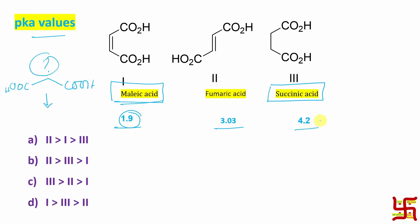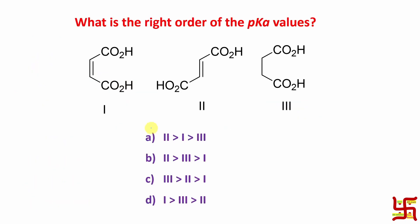So now question if I say pKa actually pKa is actually least here. So it is maximum acidic, pKa is most is 4.2. So what is the right order? Three greater than two greater than one. So this is actually the right answer. Now here as I told C is the right answer.